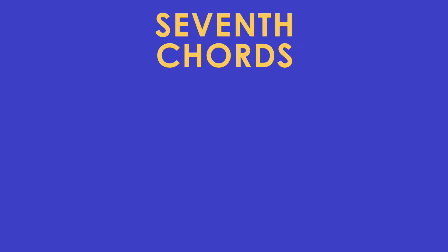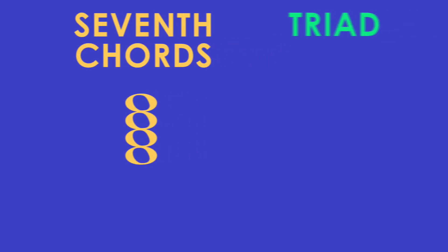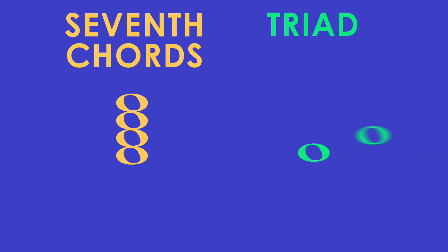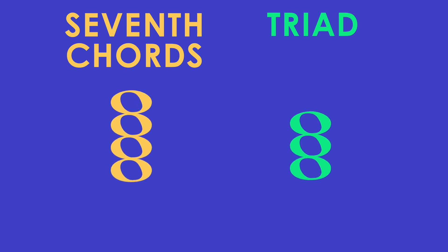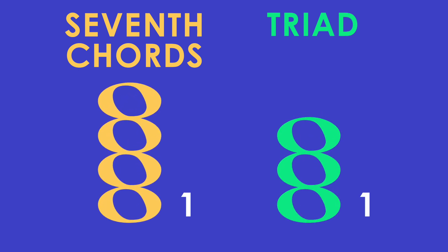Today I want to talk about the different flavors of seventh chords. Just a quick review: seventh chords are a four-note chord. That's what makes them different from a triad, which only has three notes. They're called seventh chords because in addition to the first, third, and fifth scale degrees that make up a triad, the seventh scale degree is also added. That's why it has the name seventh chord. So a triad is a three-note chord, and a seventh chord is a four-note chord.